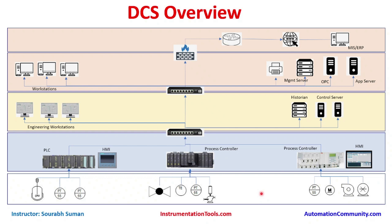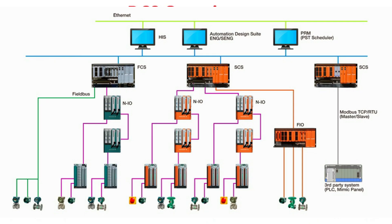All these signals are integrated to the controllers via IO cards. Multiple IO cards forward all those signals to the controller, and from the controller the data is read by the HMI software or DCS software directly, or through an intermediate software layer in between.